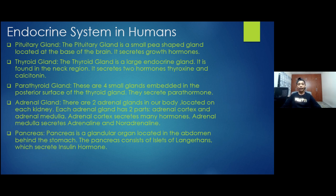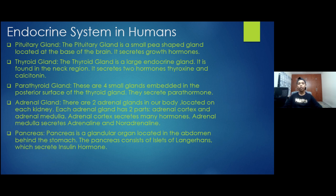The adrenal glands are two glands, each located on top of both kidneys. Each adrenal gland has two parts: the adrenal cortex and the adrenal medulla. The adrenal cortex secretes many hormones, and the adrenal medulla secretes adrenaline and noradrenaline.